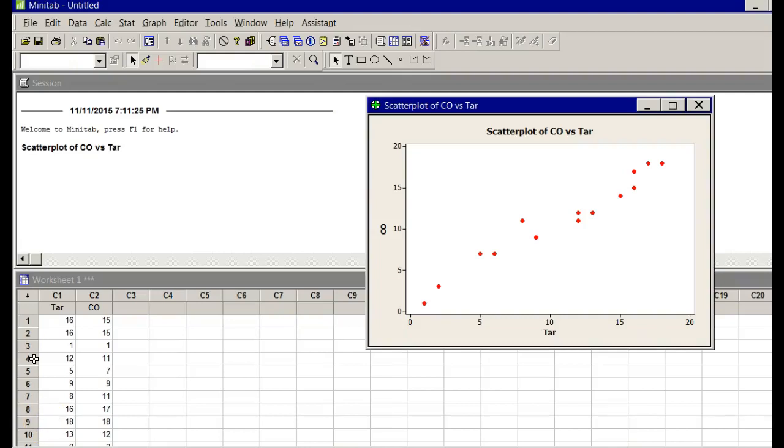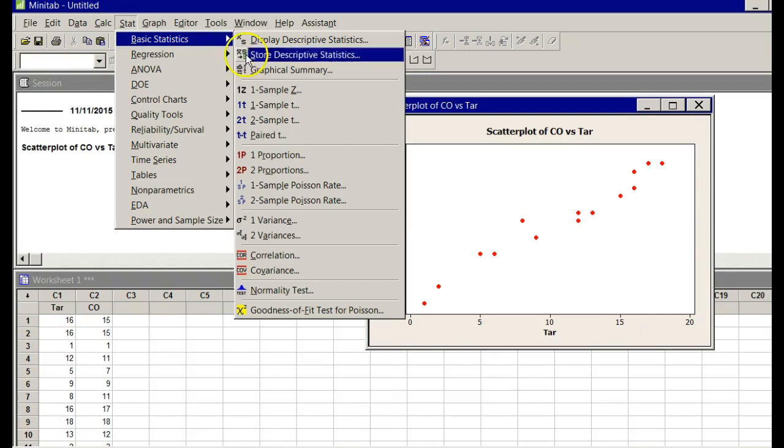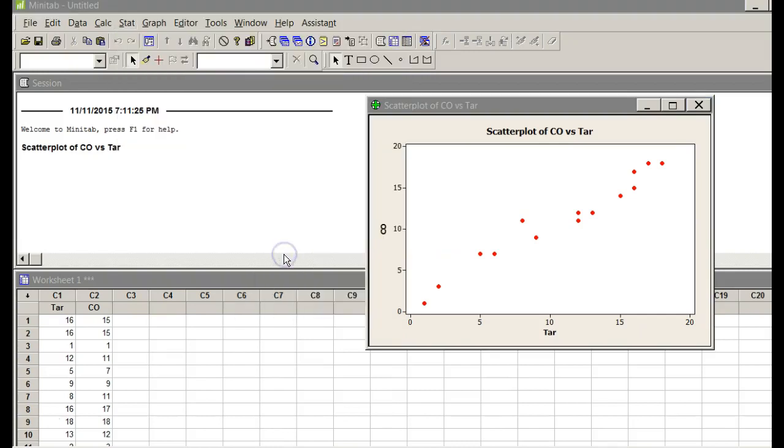On the previous video we did the scatterplot. Now let's say they ask us to get the correlation coefficient R for the same data. Just go to Stat, Basic Statistics, go down to Correlation. I'll pull this over here.